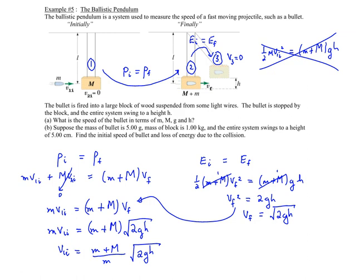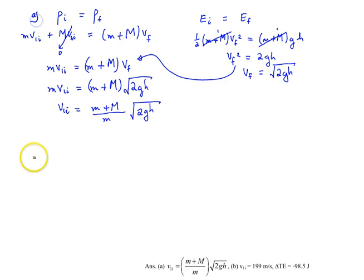Now to do part b, this was part a, part b is, well, let's substitute numbers in. So v1 initial equals, okay, and the little mass is 5g. So that's 5.00 times 10 to the power of negative 3 in kilograms. Plus the mass of the block is 1 kilogram. And that is being divided by little mass, 5.00 times 10 to the power of negative 3 kilograms.